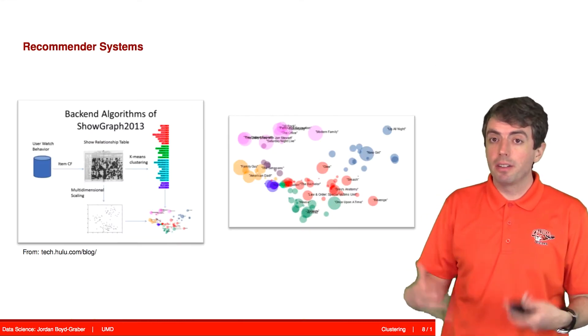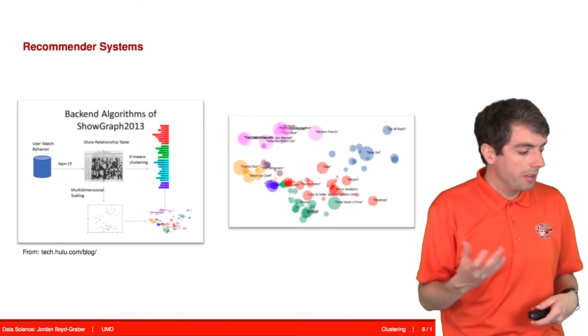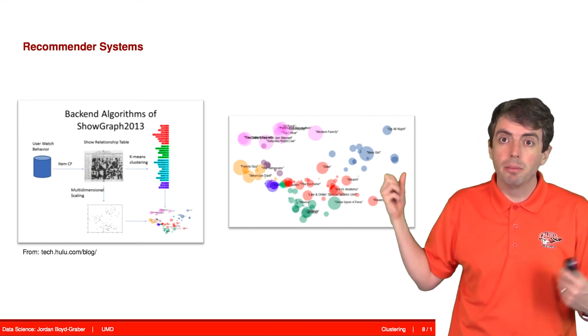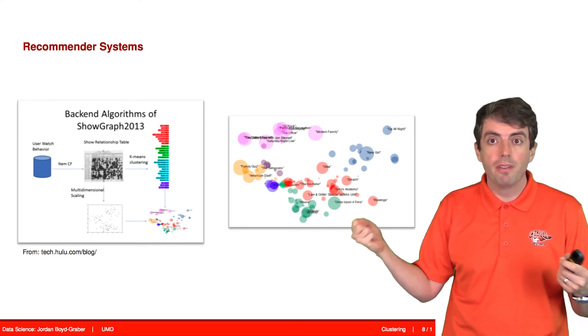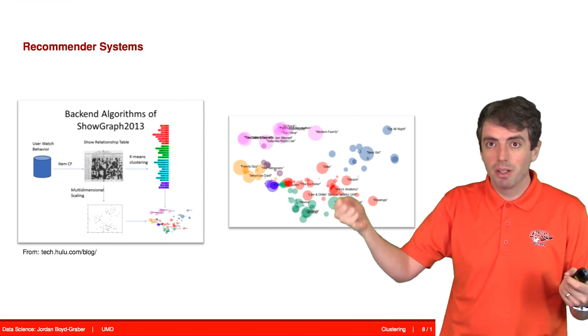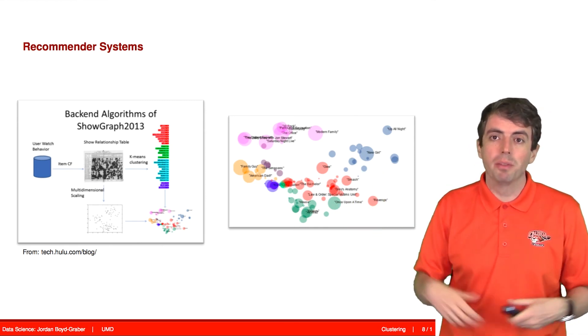Recommender systems are another place where clustering is useful. You can discover similar products and similar users. You can cluster both of those, and then similar products can be recommended to similar users.